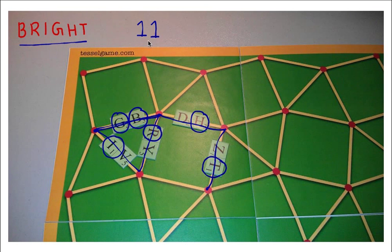Notice that bright has six letters, but we used only five tiles. We get two bonus points for each tile we save. So in this case we get two bonus points for a total of 13 points.